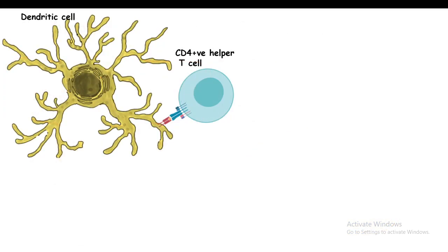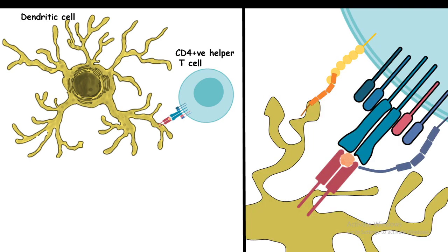Here is a CD4 positive T helper cell getting activated by the MHC-bound antigen presented to it by the dendritic cell. After activation, the CD4 positive T cell would activate B cells, which would then secrete antibodies.